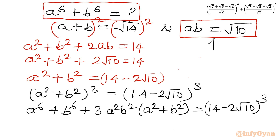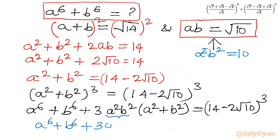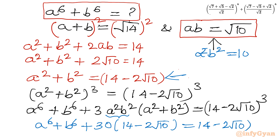Since ab = √10, we have a²b² = (√10)² = 10. So a⁶ + b⁶ + 3 × 10 × (a² + b²) = (14 - 2√10)³. Substituting a² + b² = 14 - 2√10: a⁶ + b⁶ + 30(14 - 2√10) = (14 - 2√10)³.